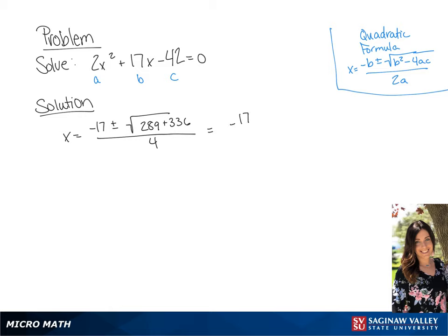If we simplify this, we get negative 17 plus or minus the square root of 625 all over 4.